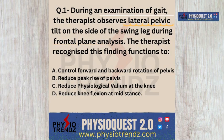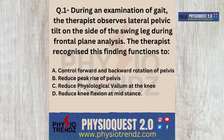The information given in the question is that a therapist observing the gait of a patient finds there is a lateral pelvic tilt on the swinging side. There is also an observation in the frontal plane analysis, and we need to find out why this finding is so important for the therapist.